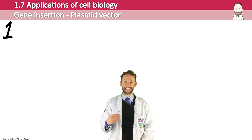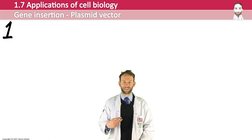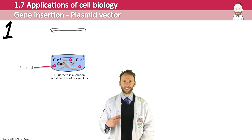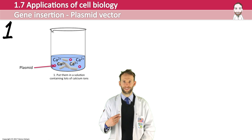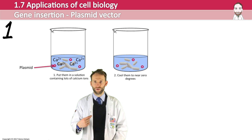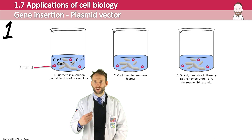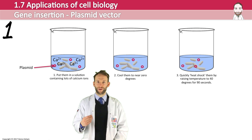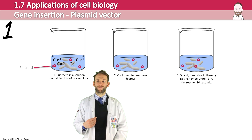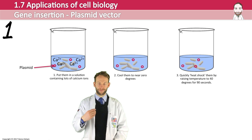The next step is to get the bacteria to take up these recombinant plasmids. To do that, you put them in a solution containing lots of calcium ions, cool them to near zero degrees, and then quickly heat shock them. If you do that, they should take up the plasmids back into the cells. Only about 1% take up the plasmid with the gene and are said to be transformed, but that can be enough.